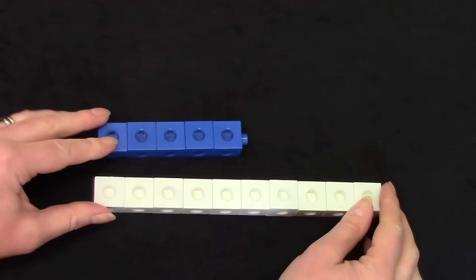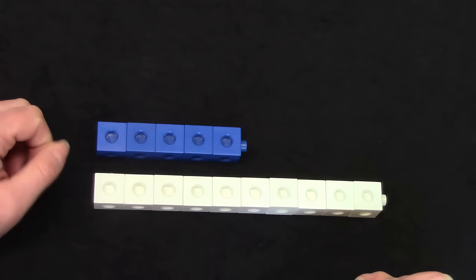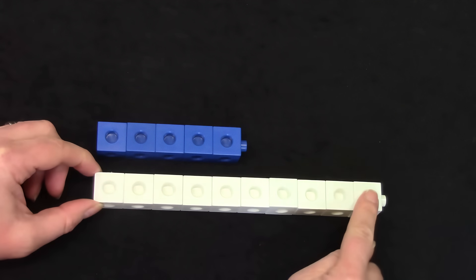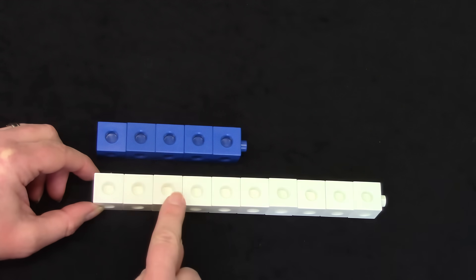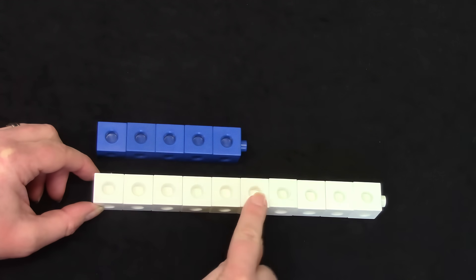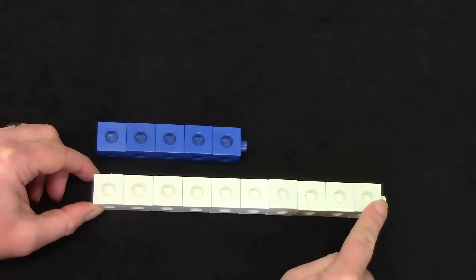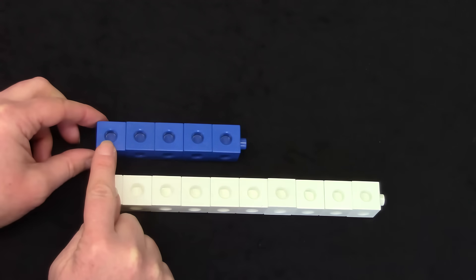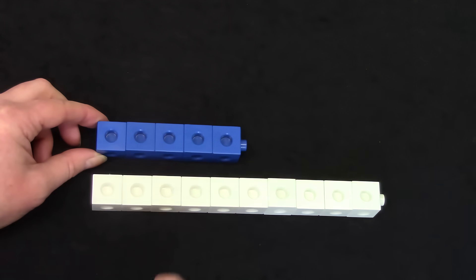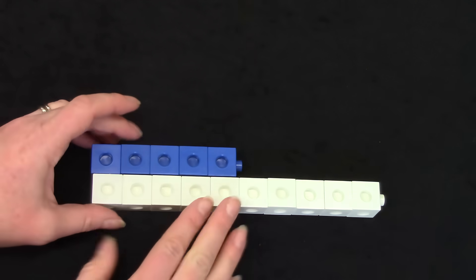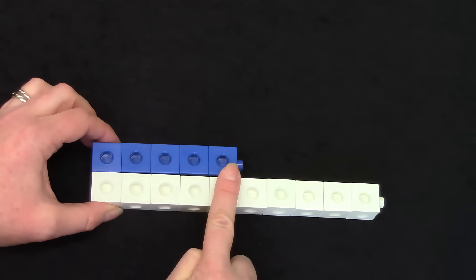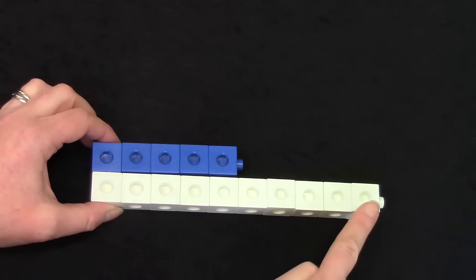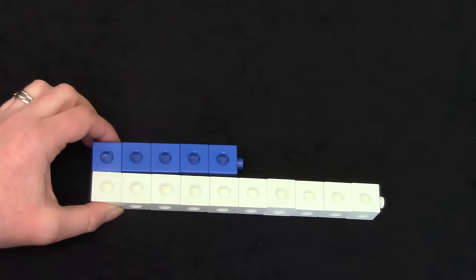I decided to put these towers pointing in the other direction. This long white tower has, hmm, why don't you count with me? 1 2 3 4 5 6 7 8 9 10. The shorter blue tower has 1 2 3 4 5. When we compare these two towers, we see that the first 5 blocks all have a partner.